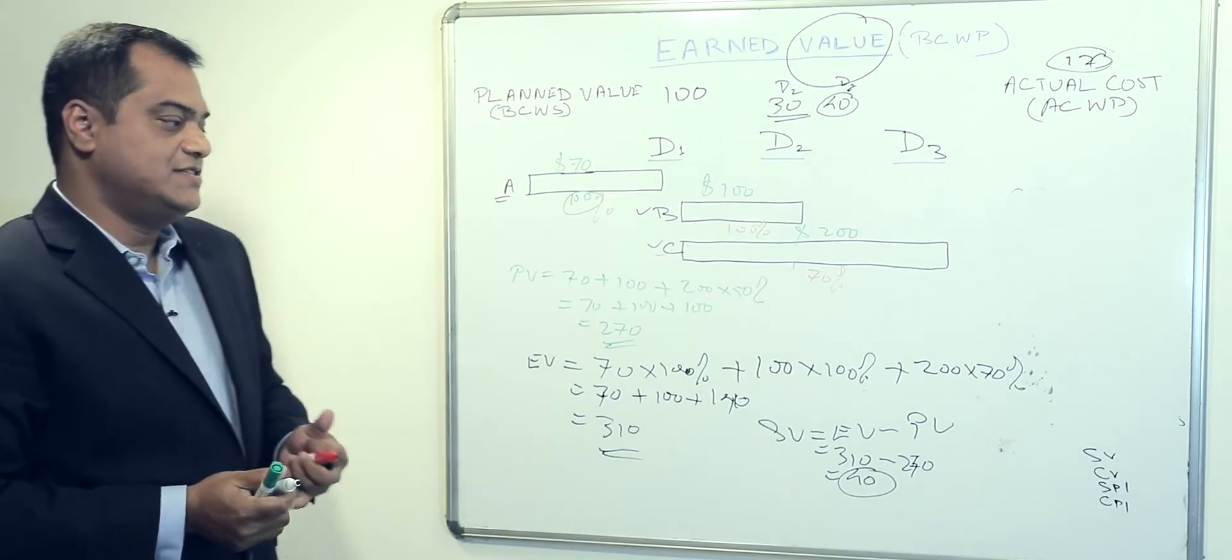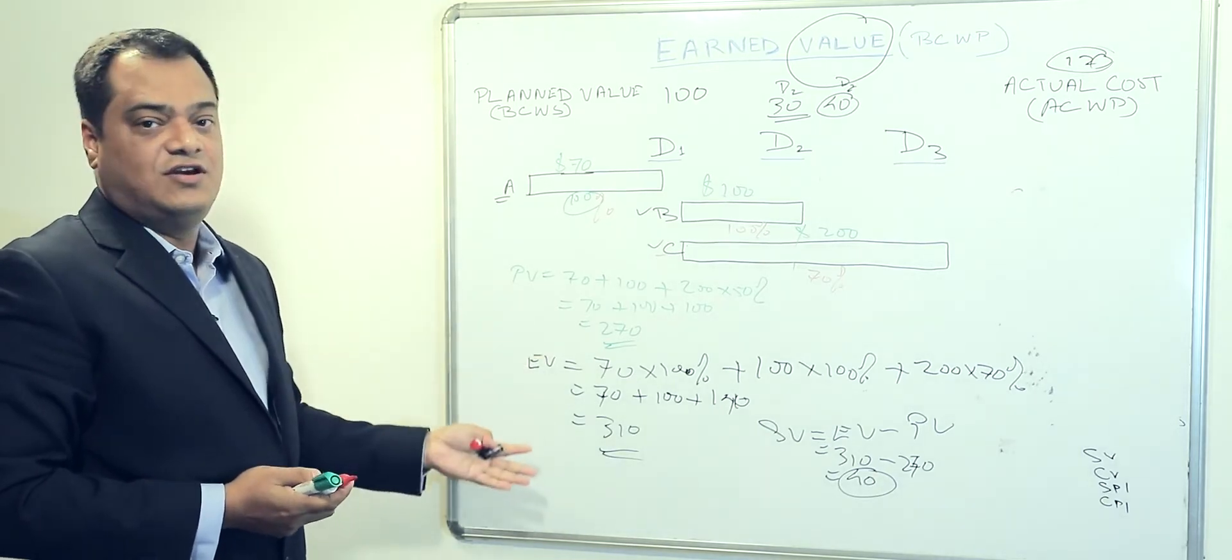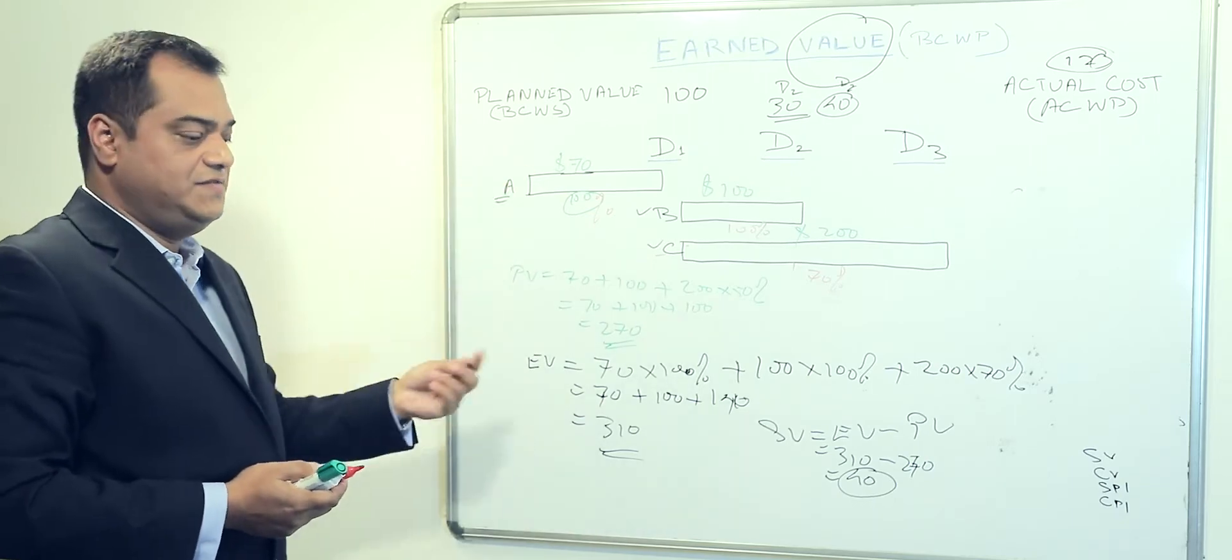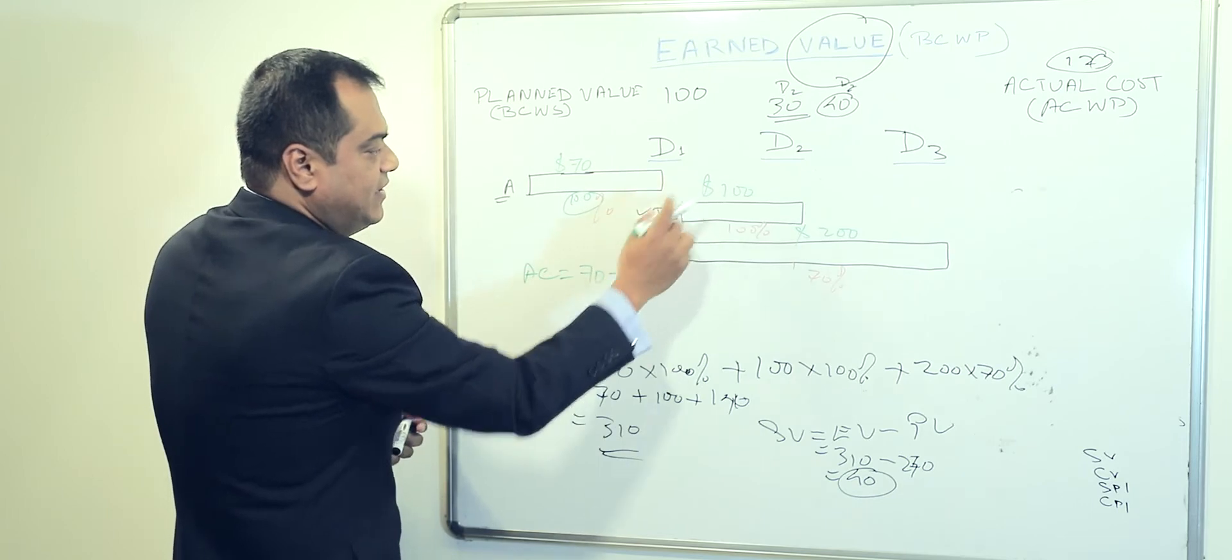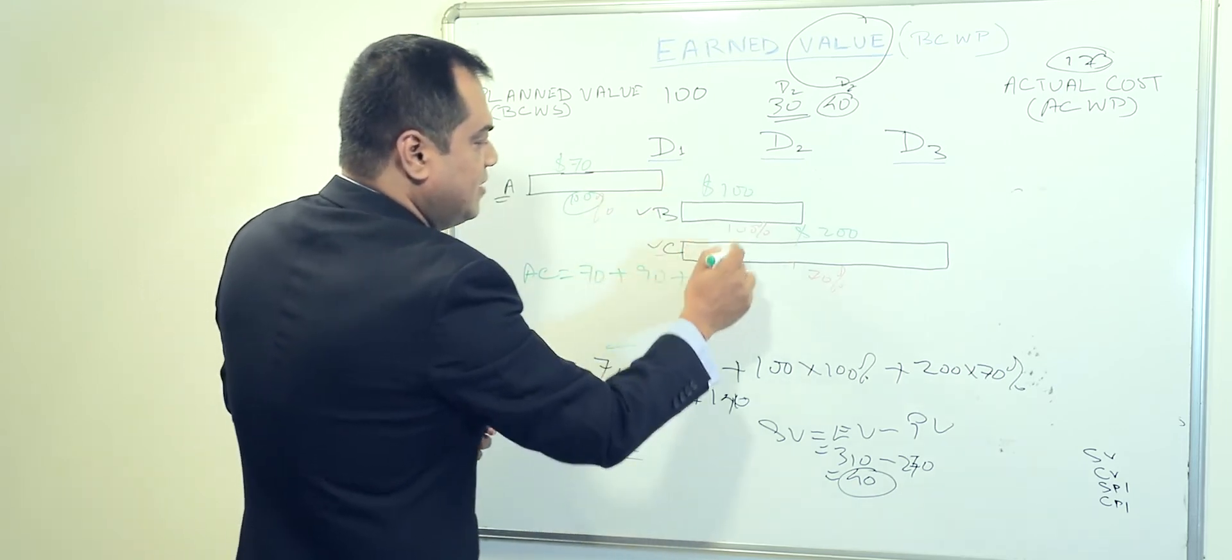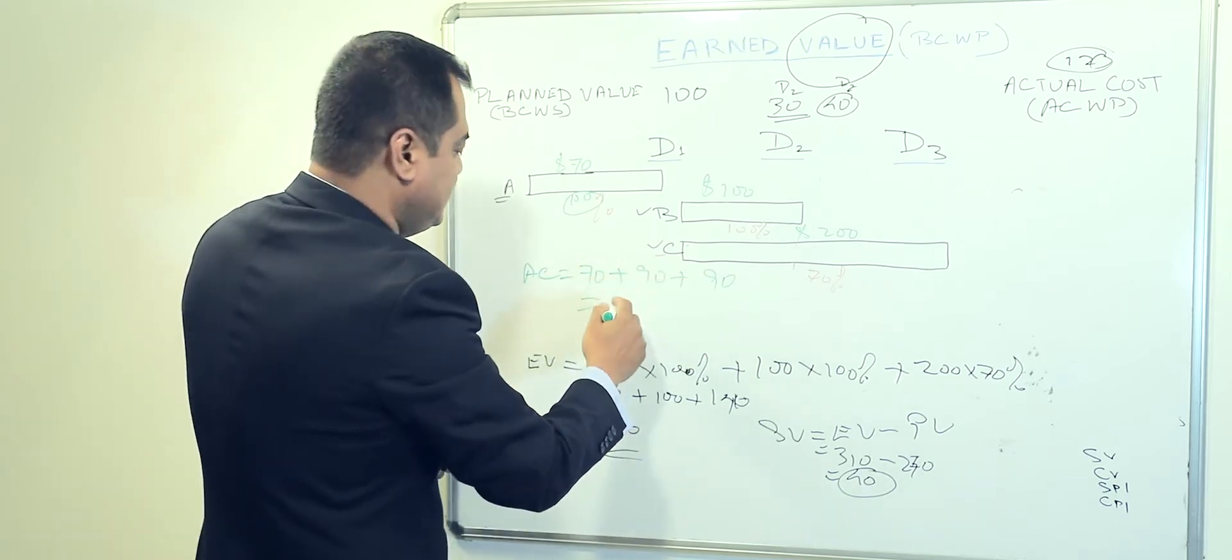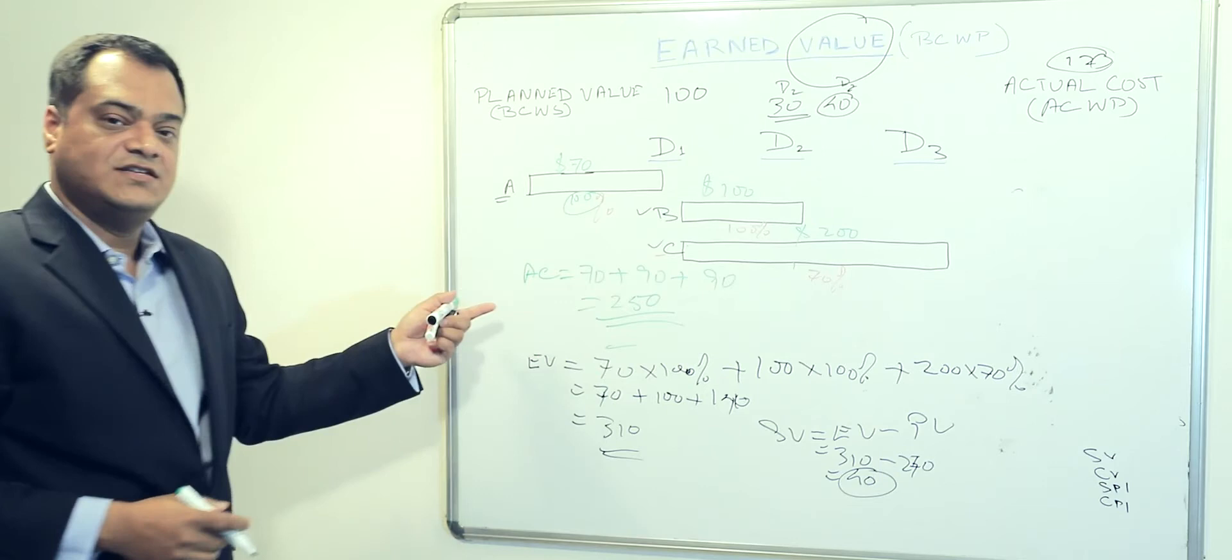Now likewise, we can also compare what is the actual cost of these activities. Let's presume the actual cost is 70 here, 90 here, and here is also 90. So that makes it 70 plus 180, so that makes it 250.